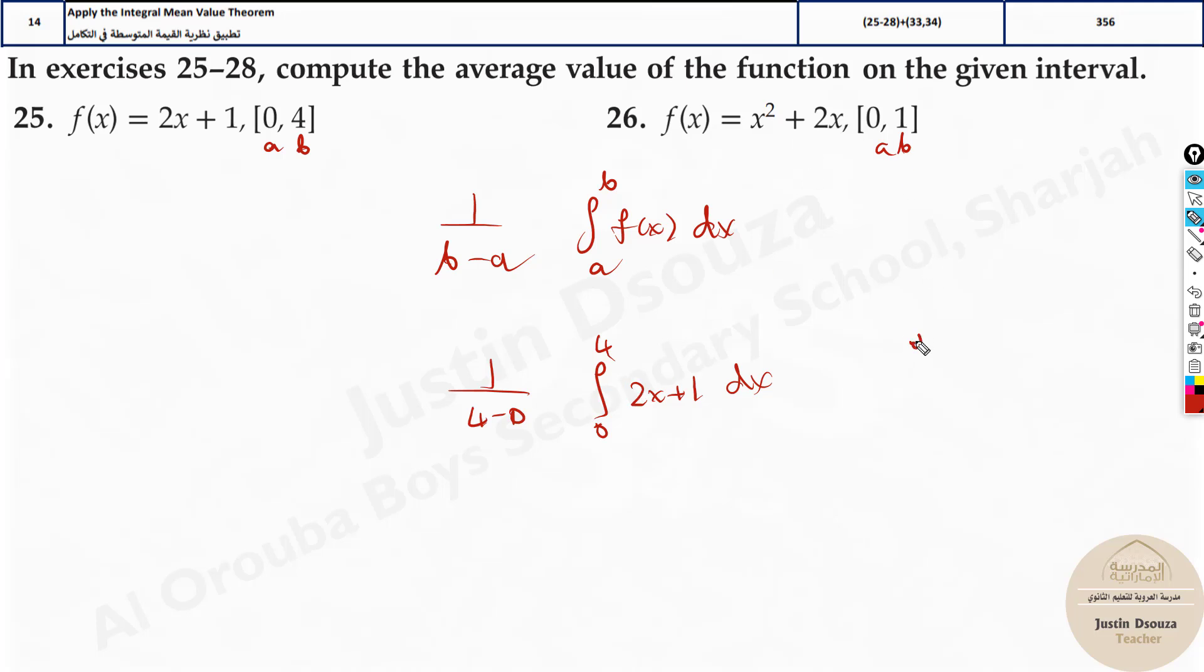Same thing over here. You can see that integral x squared plus 2x dx. The interval starts from 0 to 1 and the limit is from 1 minus 0. Just multiply this you will get the answer. Let's do it in the calculator now.